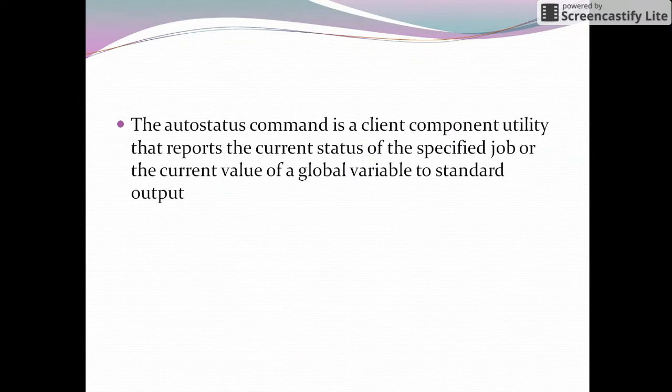Autostatus is a client utility used to get information about the current status of a particular job and to retrieve the value of a global variable.